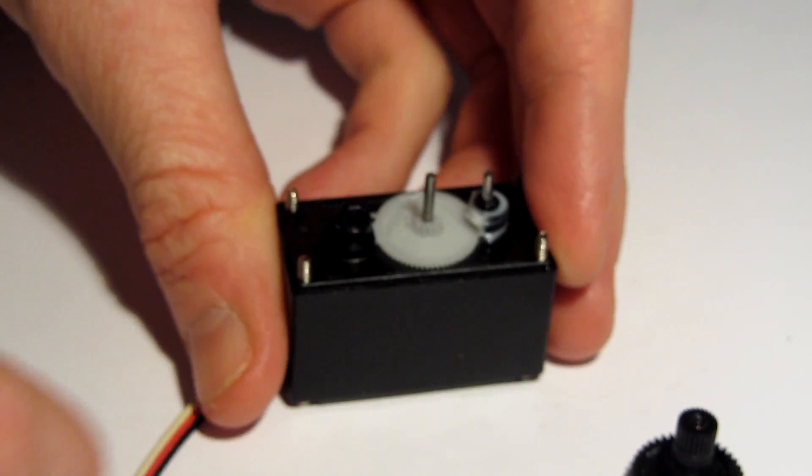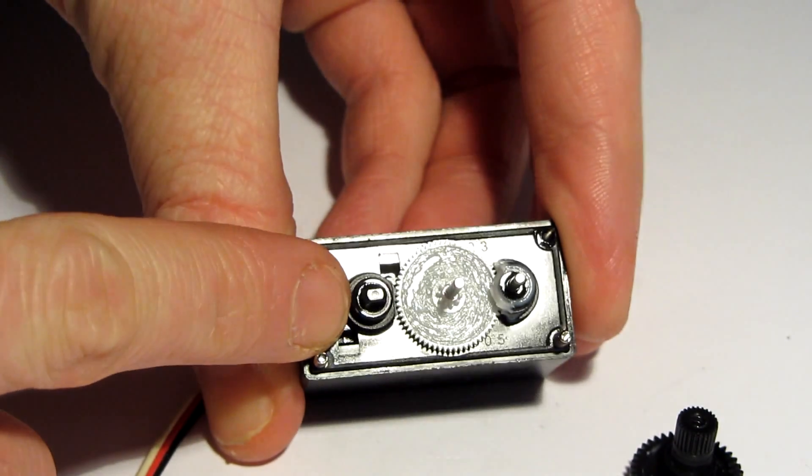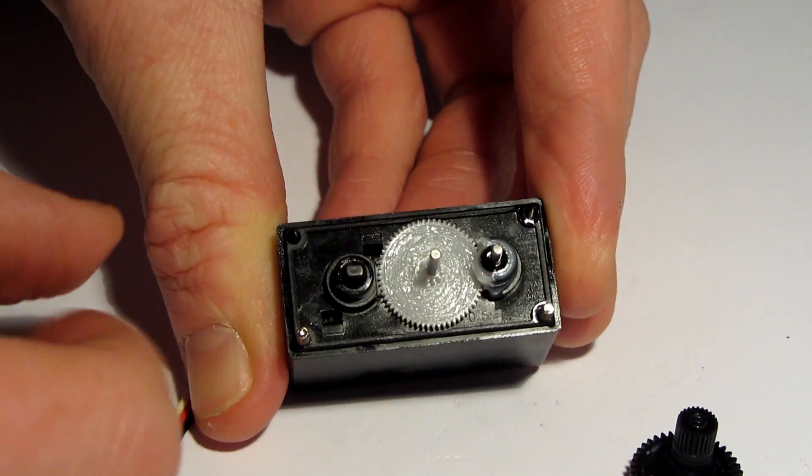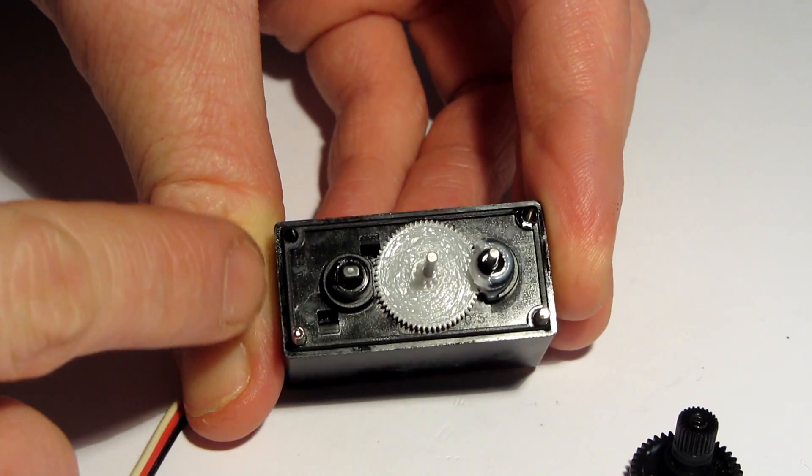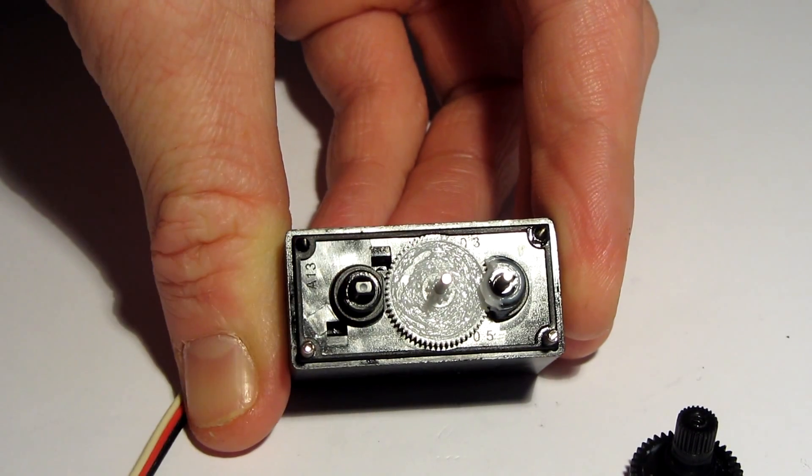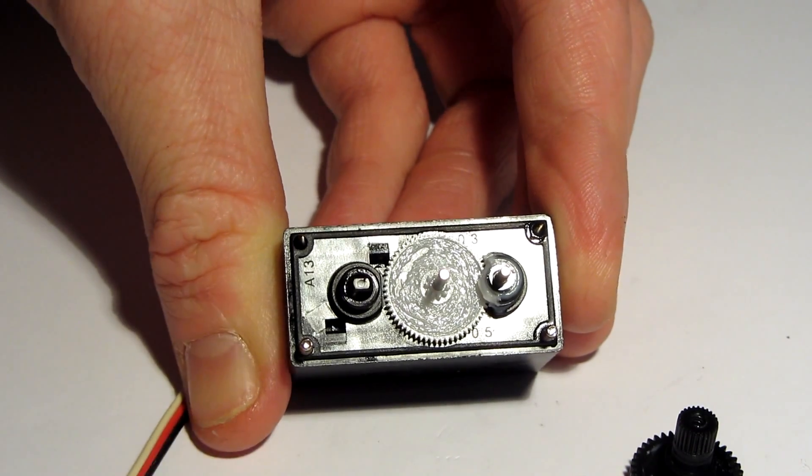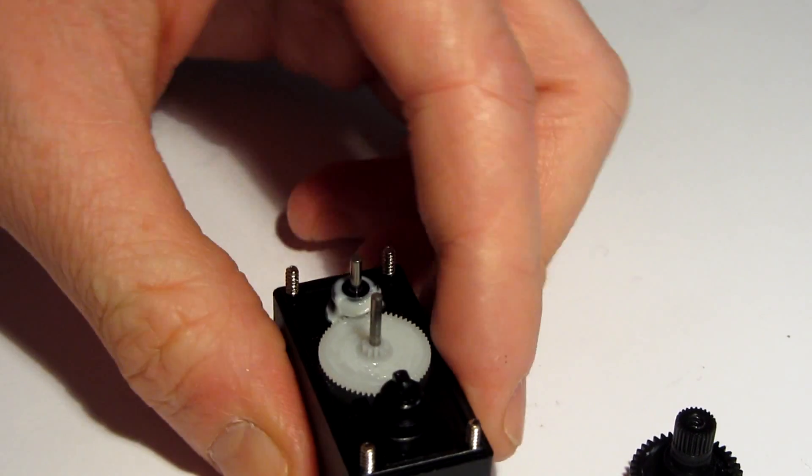Now to the servo. What we need to do is there's a potentiometer here. You want to set that as roughly as you can to the zero point. I find that position there, where it's pointing straight across to the main gear, seems to be the default zero location.